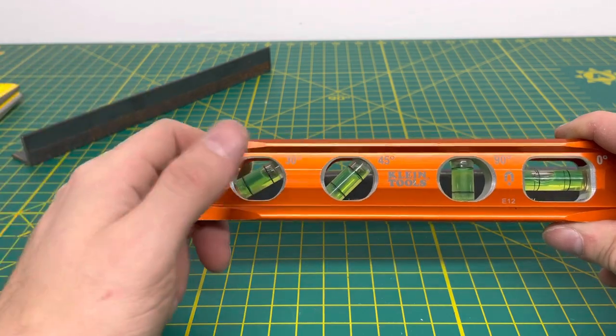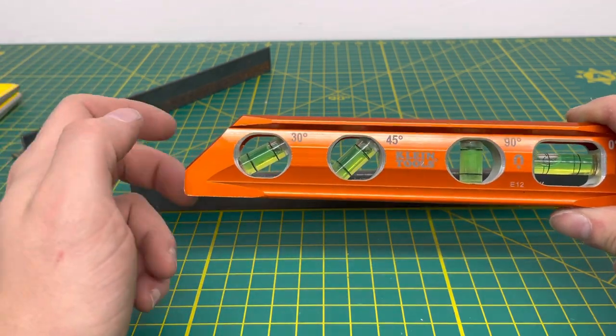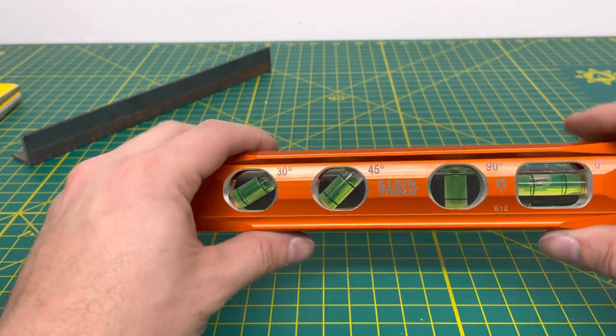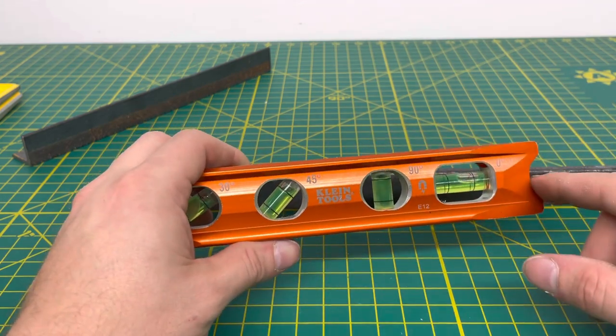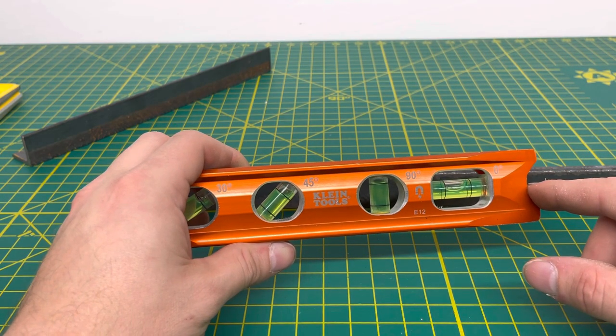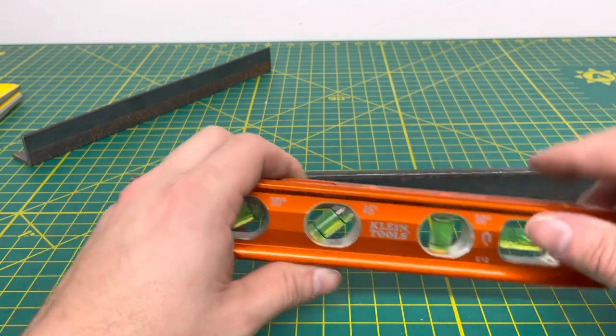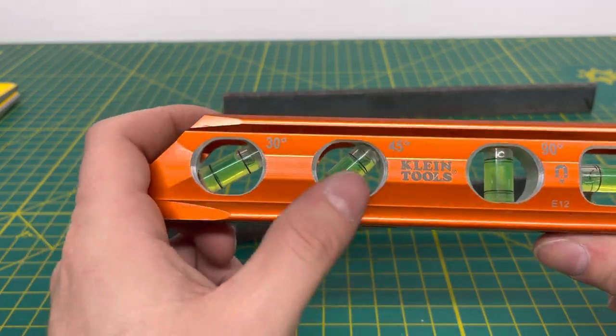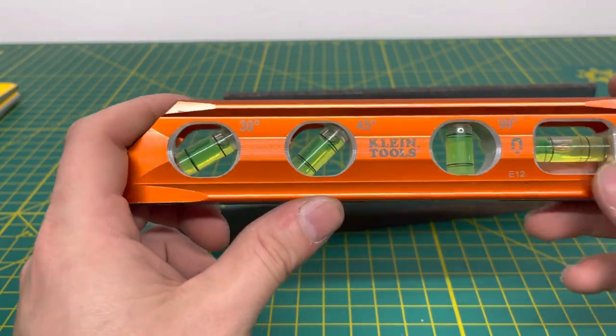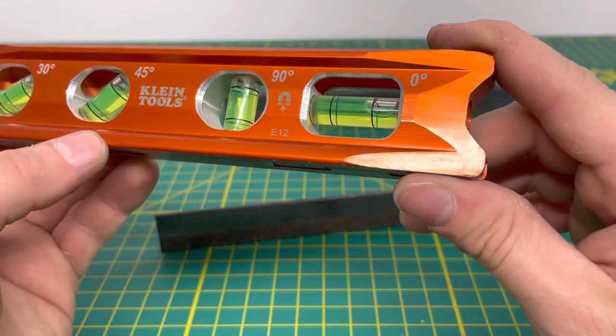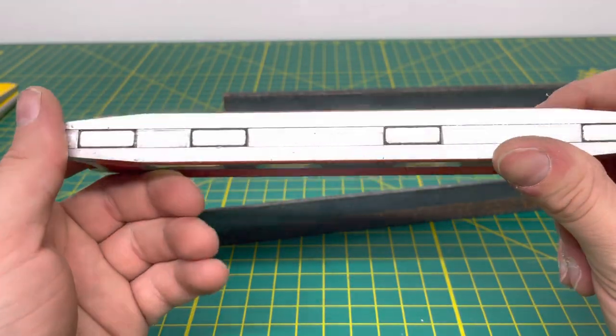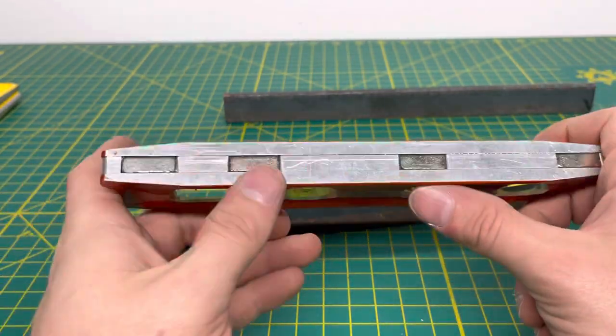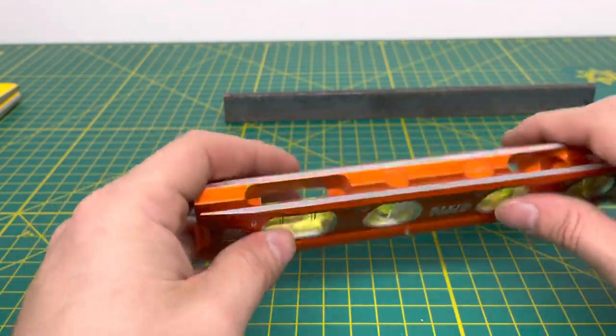But for you electricians out there or maybe some plumbers, definitely the electricians running your conduit, you want to make sure you have all your offsets correct. This probably is going to work a little bit better for you. I think Klein actually makes one that is able to clamp onto conduit, if I'm not mistaken. But we're going to see how well this guy sticks. This one's got this orange coating on here. As you can see, it's starting to wear away just a little bit, but it's not too bad. Definitely the bottom of it gets scratched up. Unlike that Empire level, you have four magnets right there and these are actually fairly strong magnets, which is nice.